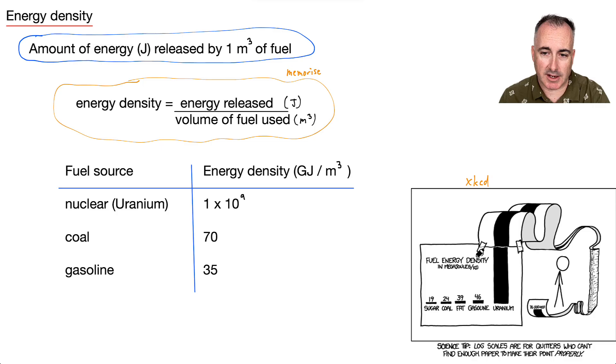This is a nice little comment from XKCD. Here, he looks at energy density in megajoules per kilogram. So he's doing a slightly different kind where he's doing it divided by kilograms. The numbers don't match, but same idea like sugar, coal, fat, gasoline, uranium. It's a lot of scales for quitters. It's just because it's so much. But that's actually why we use nuclear power plants, even though they may not be perfect. They certainly have a lot more energy density.